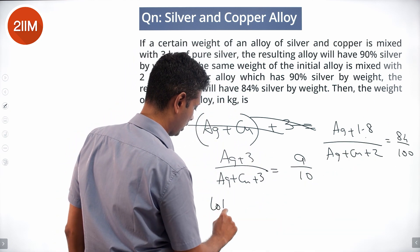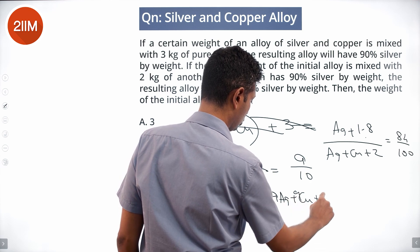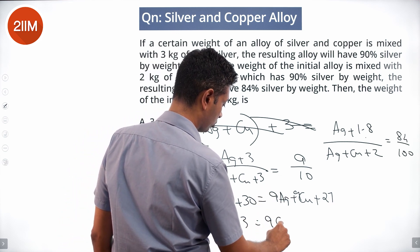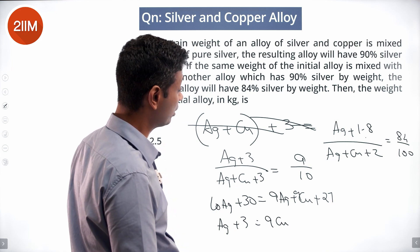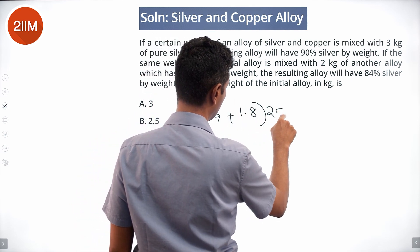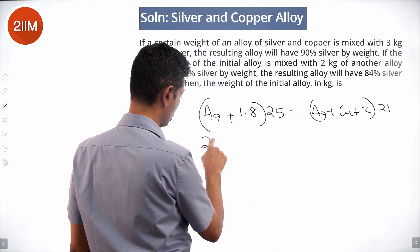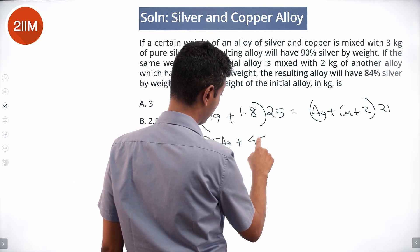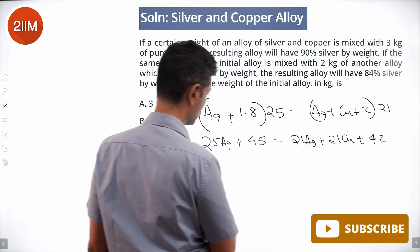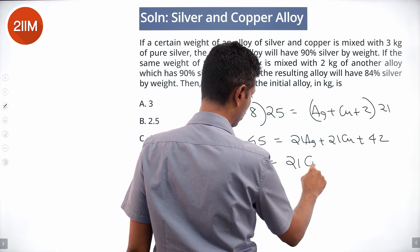Cross multiplying and simplifying: 10 Ag plus 30 equals 9 Ag plus 9 Cu plus 27, giving Ag plus 3 equals 9 Cu. For the second equation, 84 by 100 simplifies to 21 by 25, so Ag plus 1.8 times 25 equals Ag plus Cu plus 2 times 21. That gives 25 Ag plus 45 equals 21 Ag plus 21 Cu plus 42, simplifying to 4 Ag plus 3 equals 21 Cu.